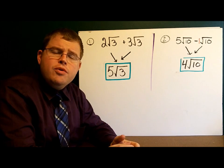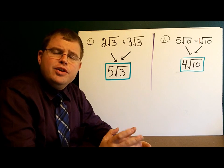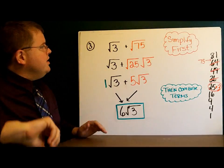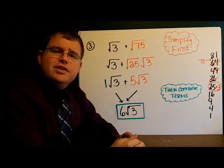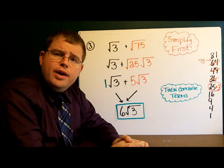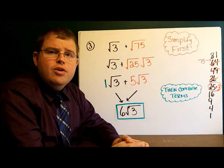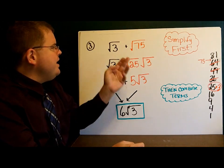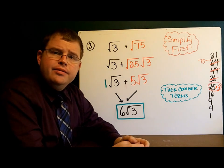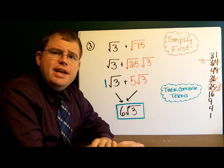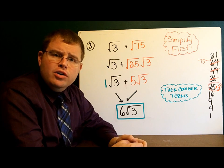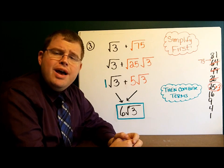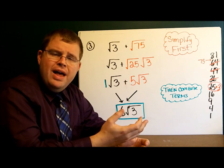Let's take a look at a few more examples where we actually have to do a little bit of simplifying. In this example, we have the square root of 3 plus the square root of 75. Notice we do not have any like terms — a 75 and a 3 are very different. The trick here is to simplify all of the square roots first; once you simplify them, you can see if you have any like terms that you can combine.